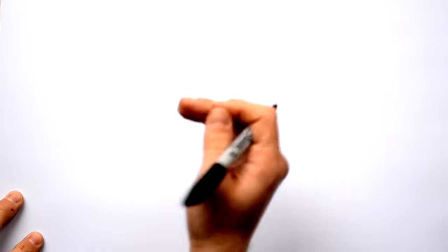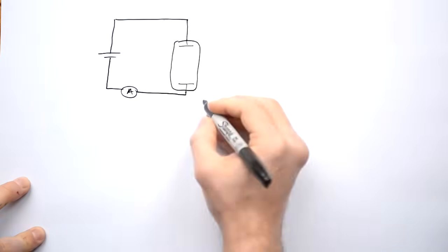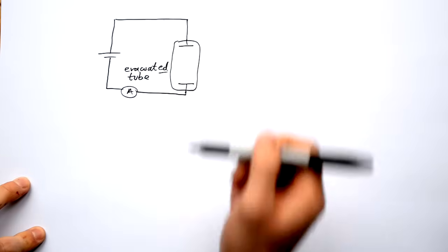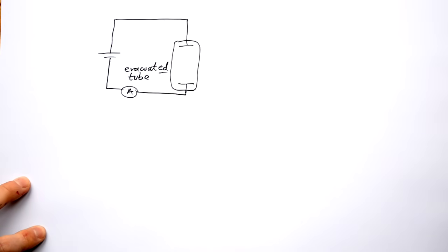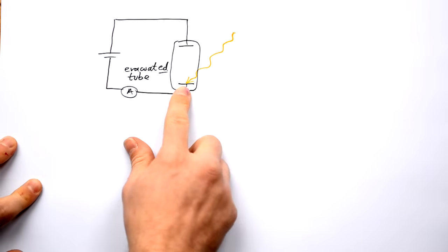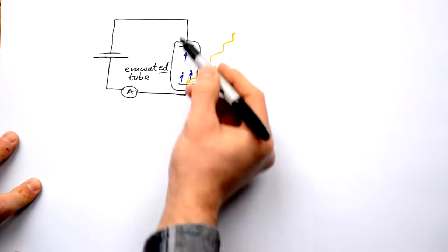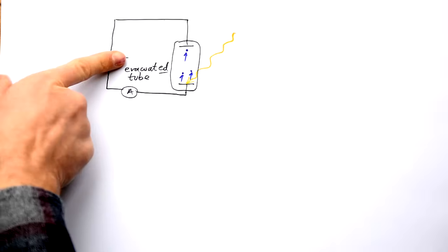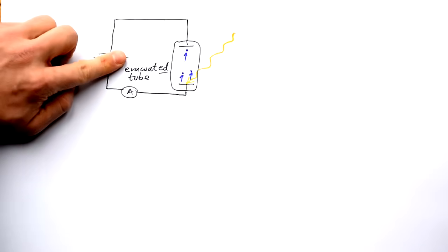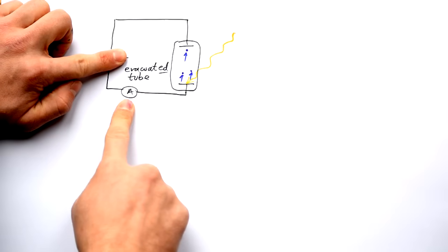When electrons are liberated from the surface of a metal, they have kinetic energy and are able to move away. The experimental setup uses an evacuated tube — no gas — so electrons can jump from one plate to the other without collisions. We shine light on one plate; the light is absorbed by the electrons, they jump off, and a current is set up in the circuit, measured by our ammeter.